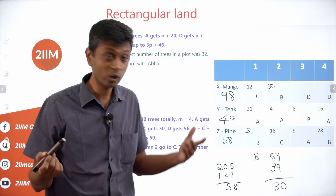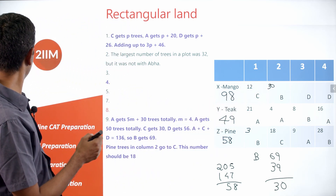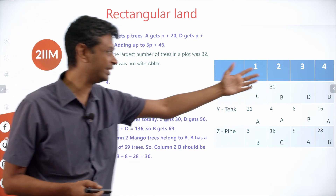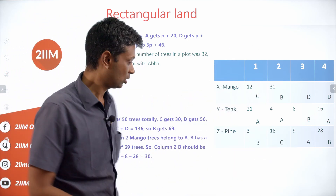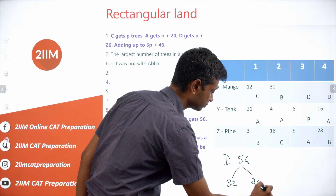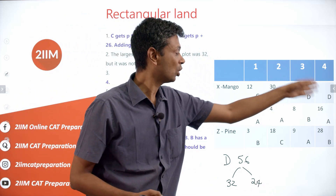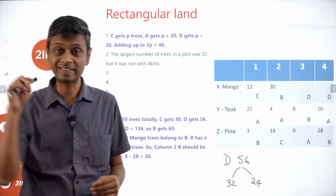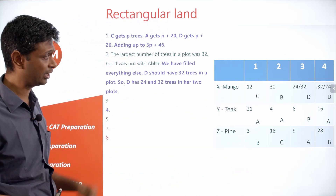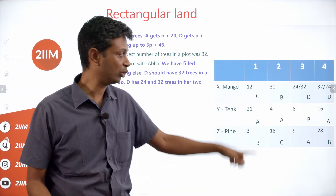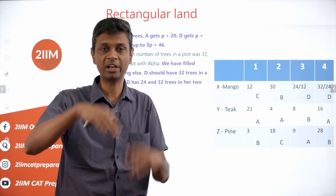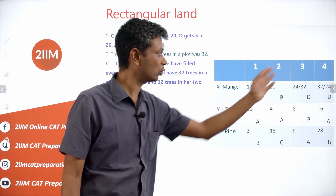With the pine cell being 3, Bina's total is 69. We have 3 plus 8 plus 28 equals 39 accounted for, so the remaining Bina cell is 30. Now the largest plot was 32 — not with Ava — so it must be with Deepti. Deepti totals 56, which means her two cells are 32 and 24, but we don't know their order.